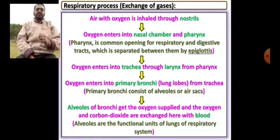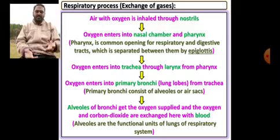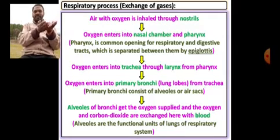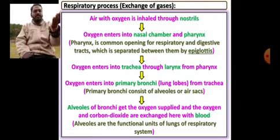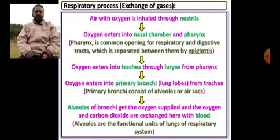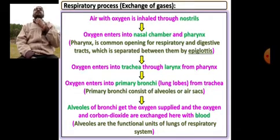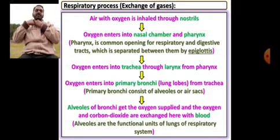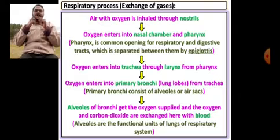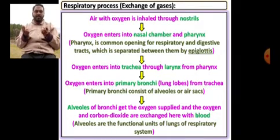Now how that exchange of gases — the respiratory process — takes place: the same thing in words as simple notes. The air with oxygen inhaled through nostrils enters into the nasal chamber and pharynx. The nasal chamber is the nasal passage. The pharynx is a common opening for both the respiratory as well as digestive tracts — that box structure — a common opening for both respiratory and digestive tracts.